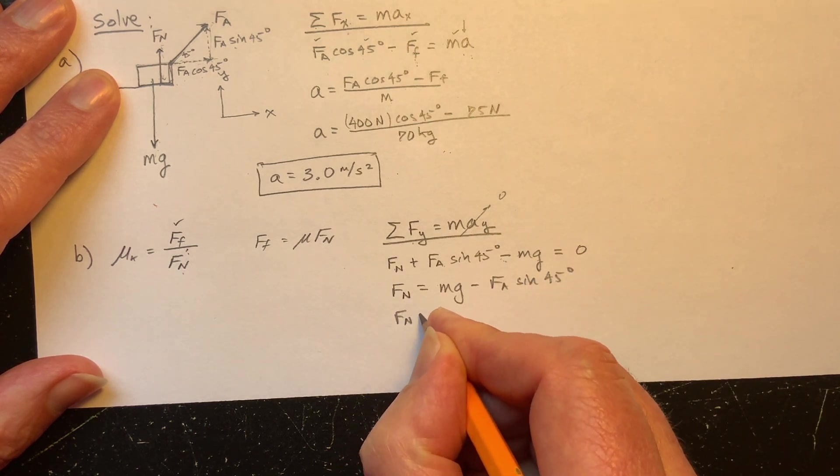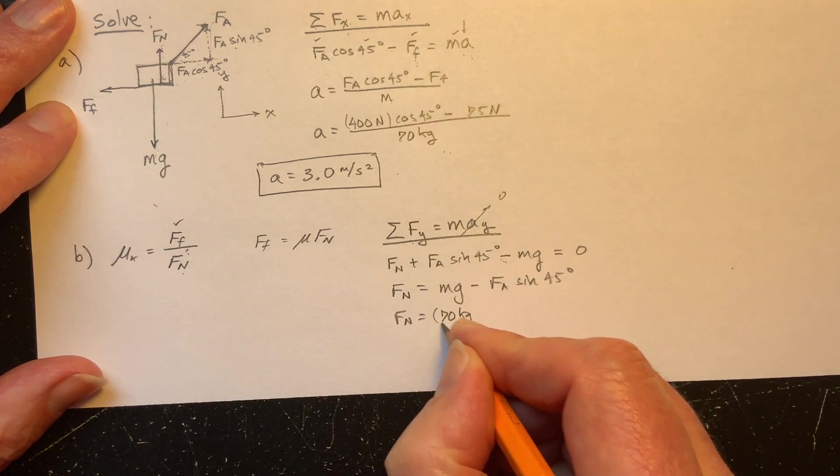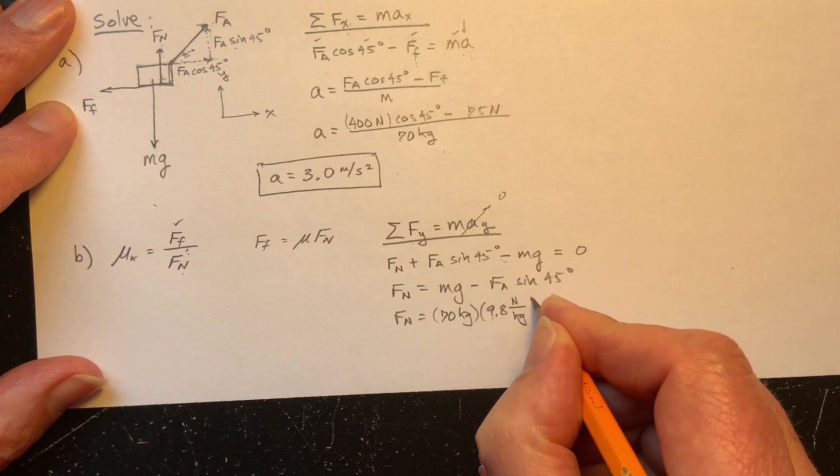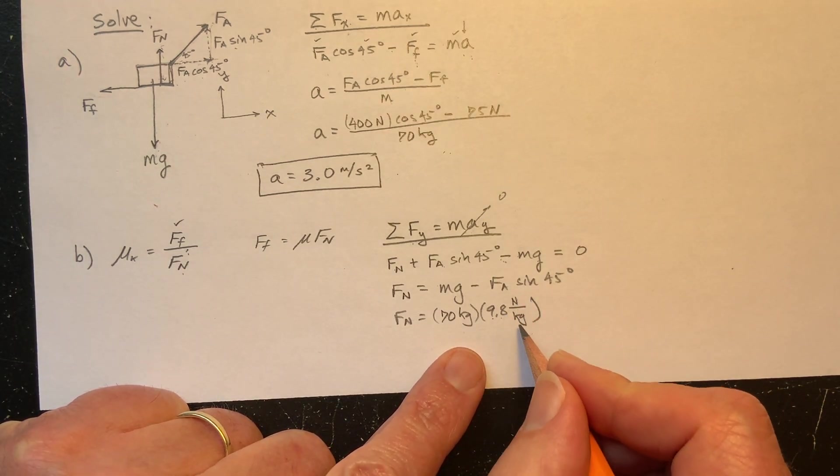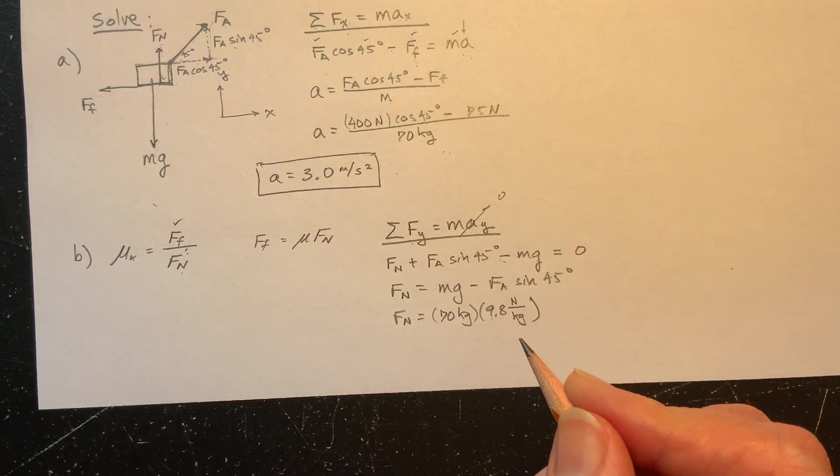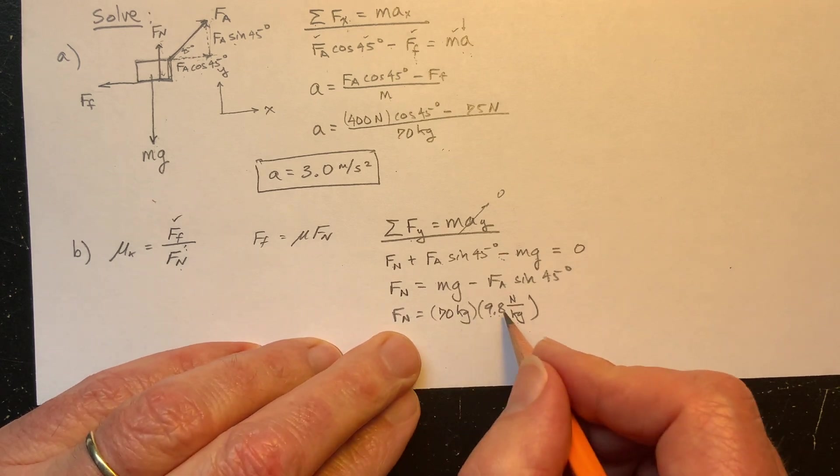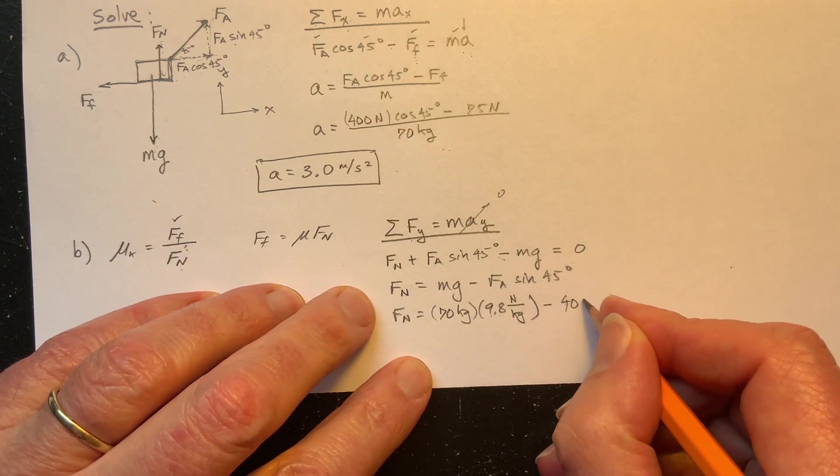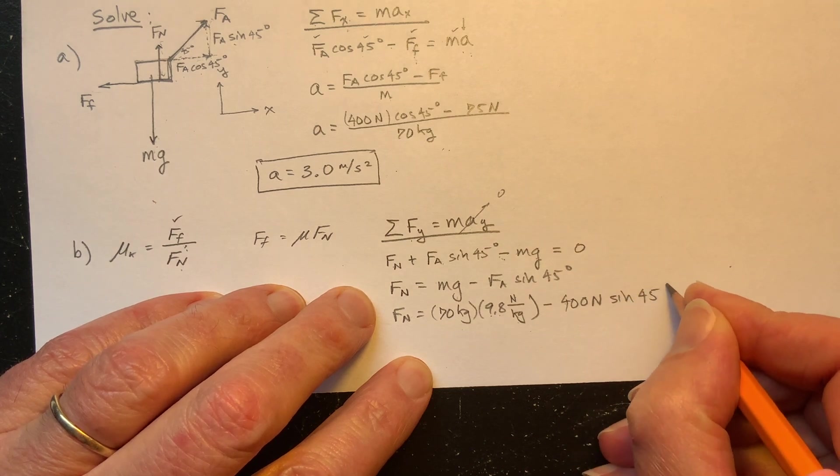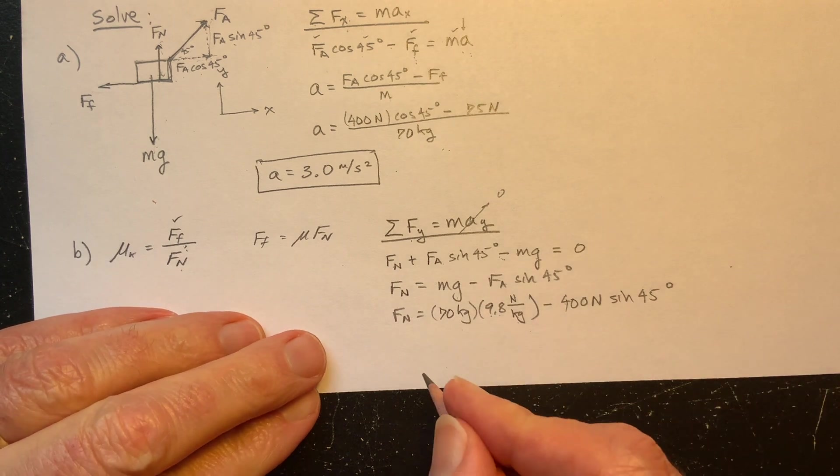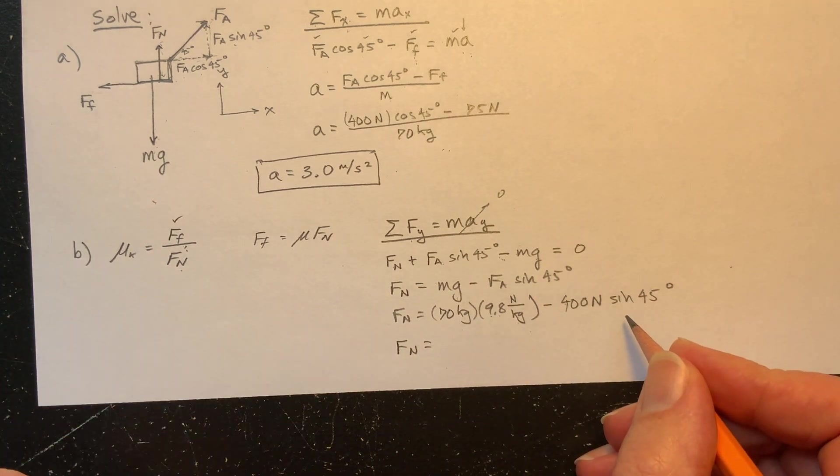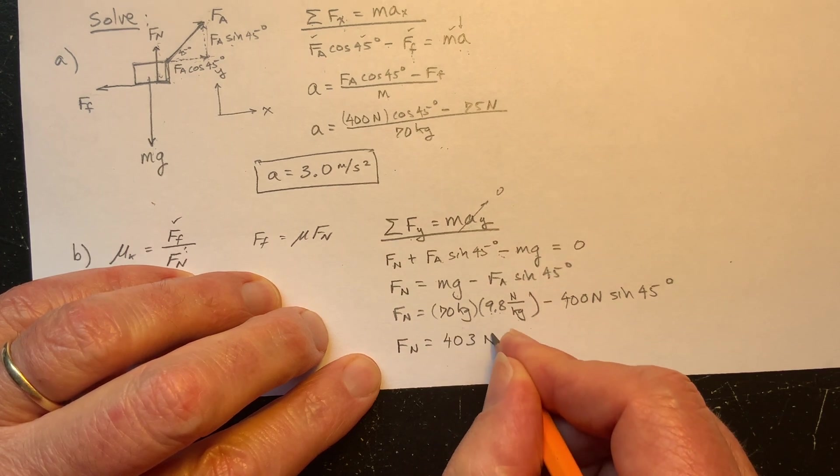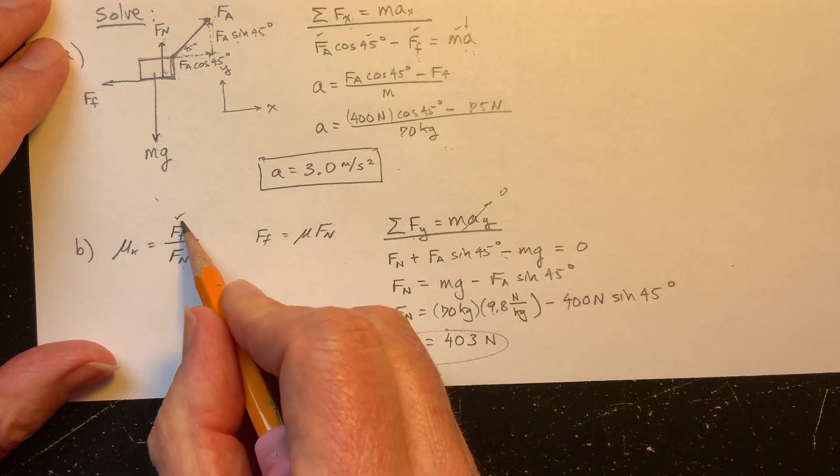So this lets me solve for the normal force. That's going to be equal to the weight minus the applied force times the sine of the angle. I'm now ready to plug in my values. And this is 70 kilograms times 9.8. Remember, gravity pulls with 9.8 newtons of force for every kilogram of mass. That's one way of thinking about gravity. How much force do you get per kilogram? Now, if it's in freefall, that turns into meters per second squared, is the acceleration. But I like using g like this when I'm trying to figure out what the force is. That's a way of thinking about it. This is 400 newtons times the sine of 45 degrees.